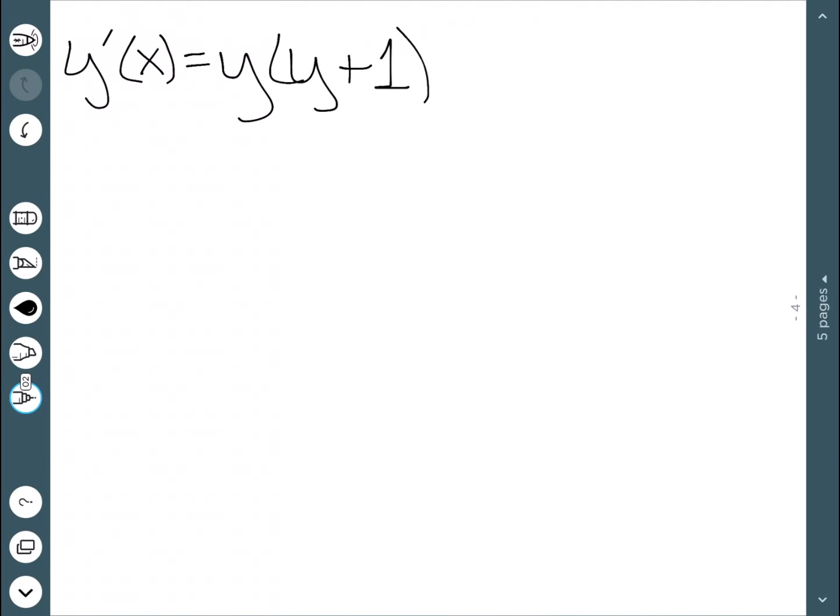Here I have y prime is equal to y times y plus 1. Our first step is to figure out whenever this is equal to 0. We can see that happens at y equal to 0 and y equal to negative 1.